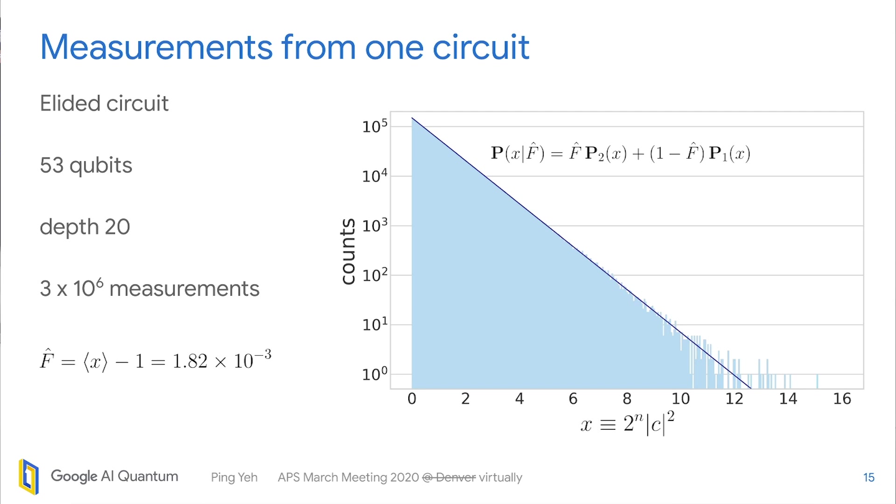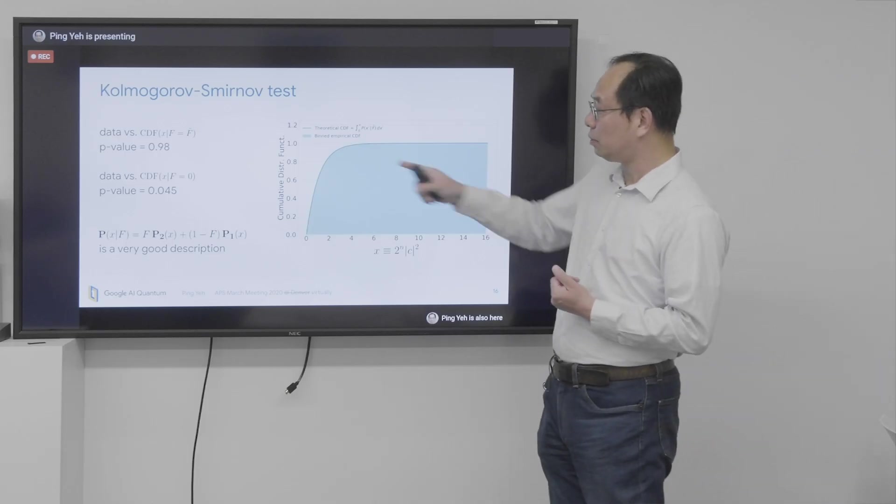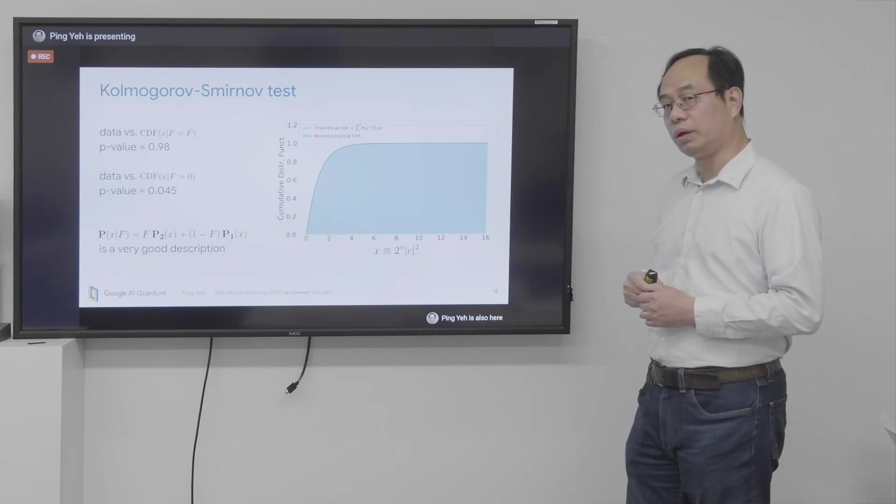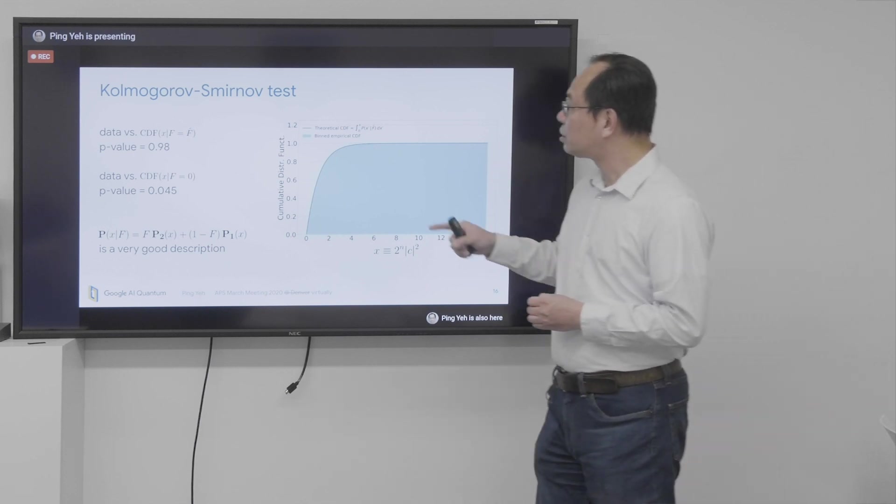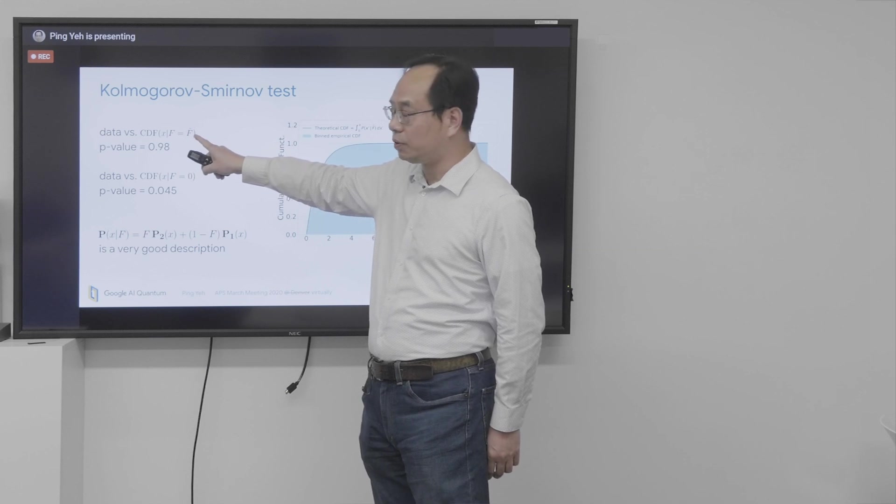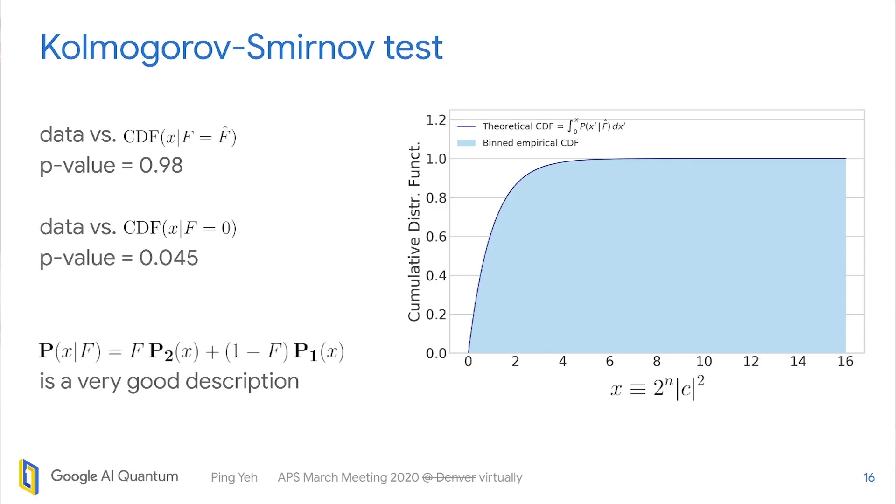We want to quantitatively measure how similar they are with each other. So we use the Kolmogorov-Smirnov test. So it will give you a p-value of the kind of, you can interpret it as a probability that the data is drawn from this distribution function. So a p-value close to 1, in this instance 0.98, means that it's very close. We have high confidence that this is from that distribution. And if we change the theoretical distribution from the estimated fidelity to, for example, 0 fidelity, the p-value goes down to very low. So we have confidence here that the model PDF is actually a very good description of the data.